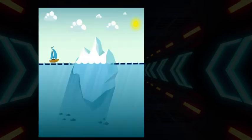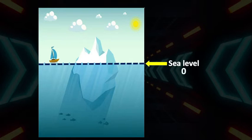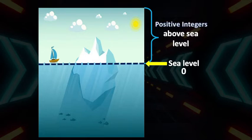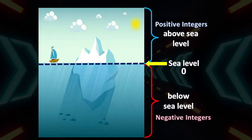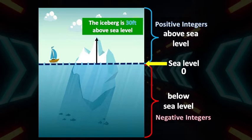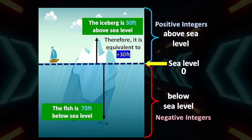Integers can also be modeled by this example: the sea level represents zero, while above sea level represents positive integers, and below sea level represents negative integers. Let's say the iceberg is 30 feet above sea level — it means it is equivalent to positive 30 feet. While the fish is 75 feet below sea level, it means it is equivalent to negative 75 feet.